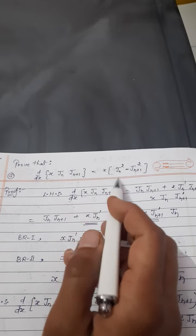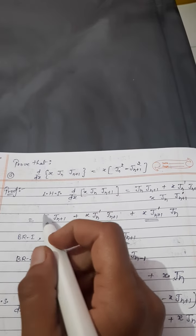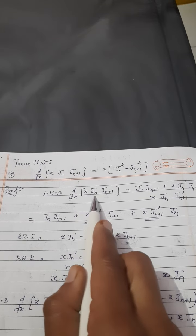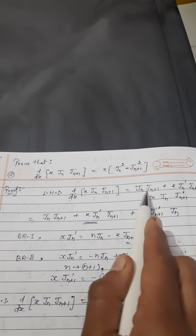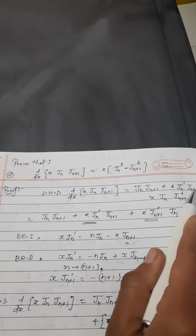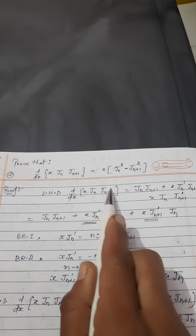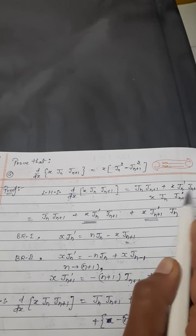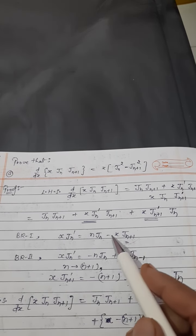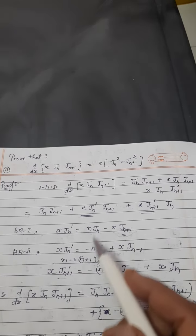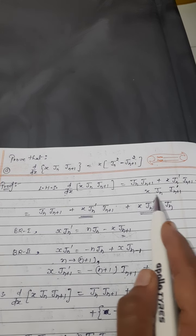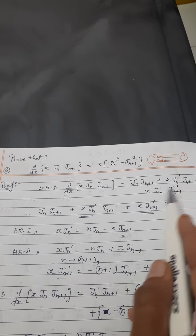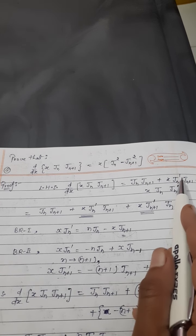Left side लेकर right side के equal prove करेंगे। Differentiation of all three terms: x का differentiation 1 हो जाएगा, so Jn·Jn+1, plus x as it is, Jn+1 as it is, Jn का J'n, plus x·Jn as it is, और इसका differentiation J'n+1. यहाँ x·J'n और x·Jn+1·J'n+1 — इन dash वाली terms को remove करना है।